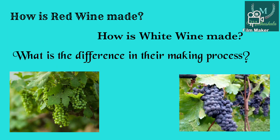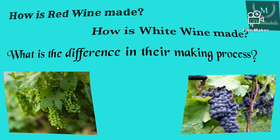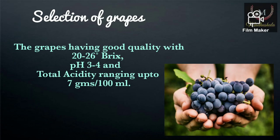Now we will discuss the process of red wine making and white wine making, and the differences in their making processes. The first and most important step in winemaking is selection of grapes. Grapes are grown in the vineyards; when they reach optimum maturity they are harvested. Good quality grapes are chosen having 20 to 26 degrees Brix, with pH ranging from 3 to 4, and total acidity ranging up to 7 grams per 100 ml.